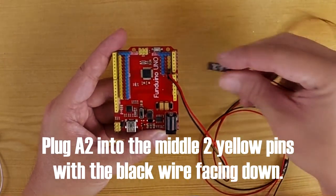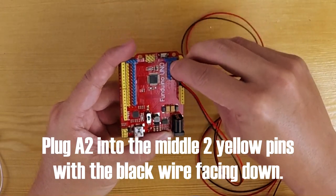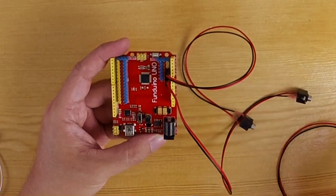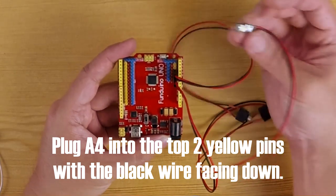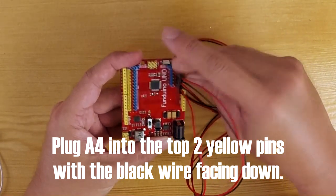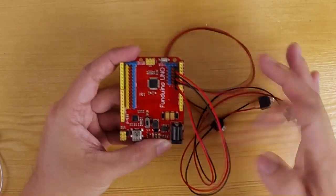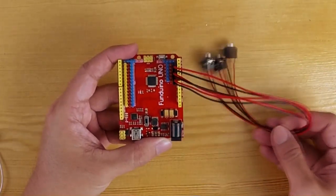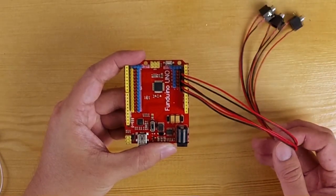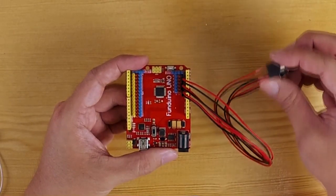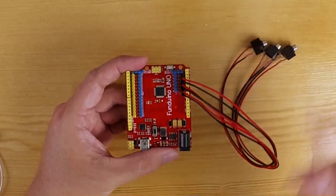The next one will be A2. A2 will be the next 2 pins. Again black facing towards the power connector. And A4 will be going into the last 2 pins. Black to the power connector. So this will be the 3 on this side. So they will correspondingly be barrels 1, 2 and 3.